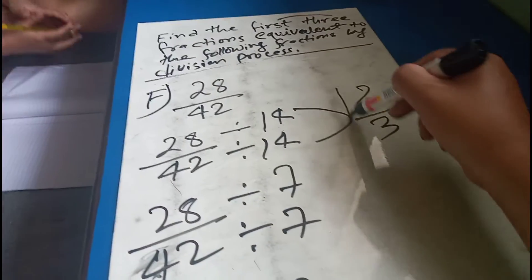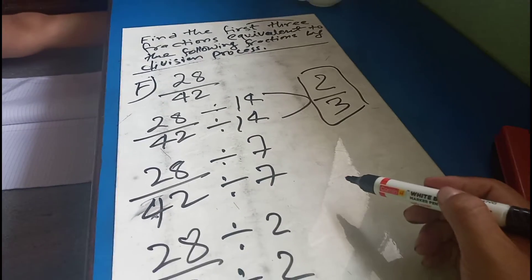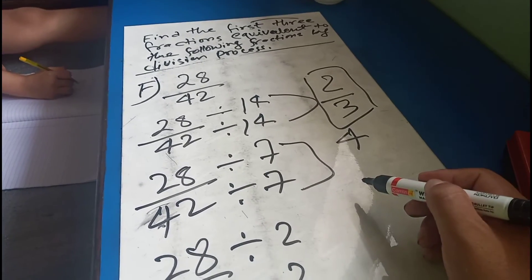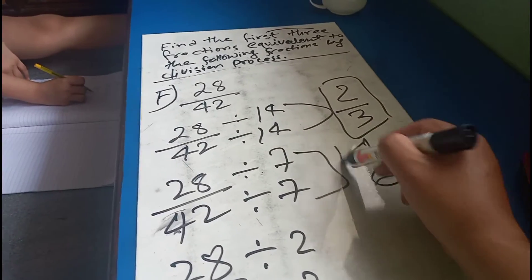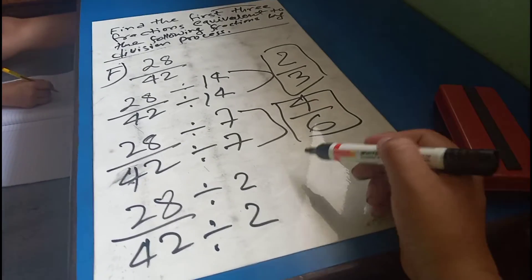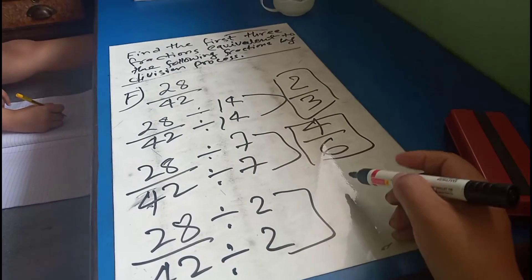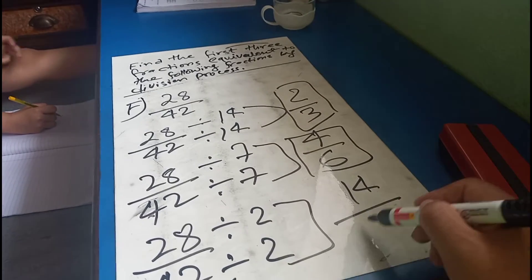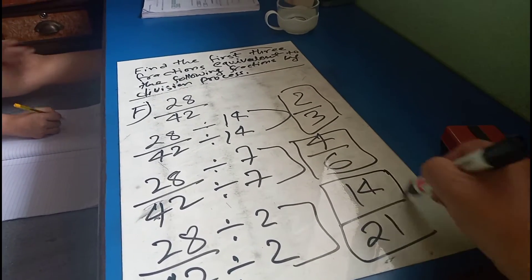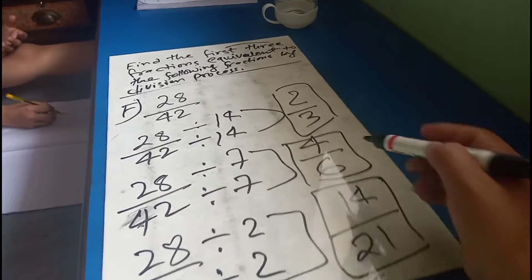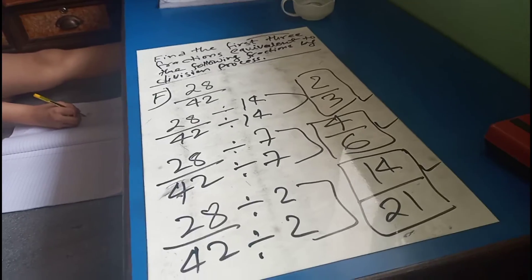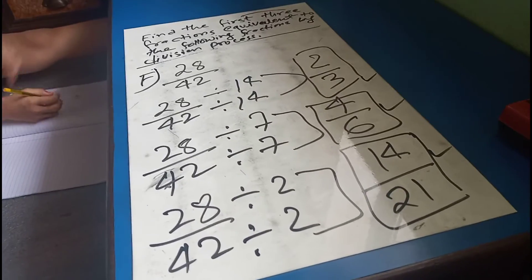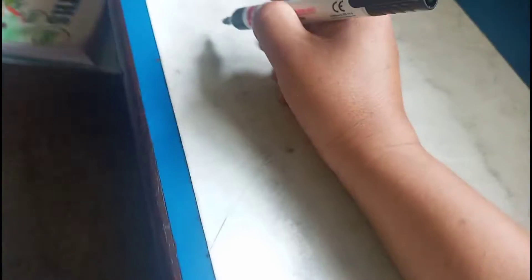7 for 28, 7 and 6 for 42. When you go from 14 to 28 to 21, job for fraction — one fraction, two fraction, and three fraction.